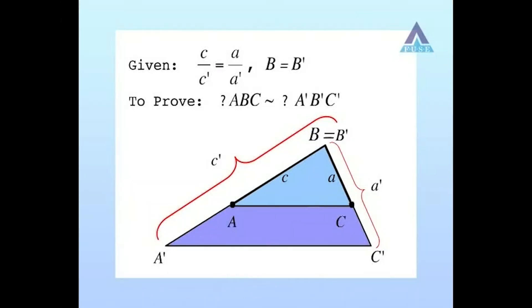We have the equalities B equals B' and A equals A'. And so, by the AA similarity postulate, we conclude that triangles ABC and A'B'C' are similar.